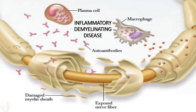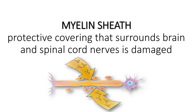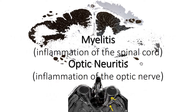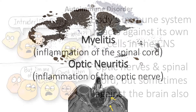An Inflammatory Demyelinating Disease. The myelin sheath, a protective covering that surrounds brain and spinal cord nerves, is damaged. The patient develops myelitis, inflammation of the spinal cord, and optic neuritis, inflammation of the optic nerve.